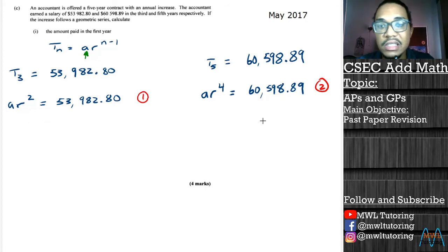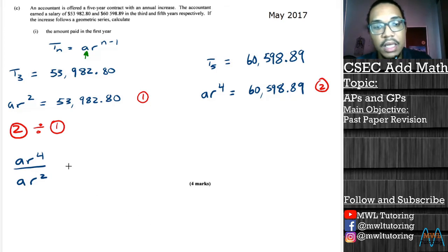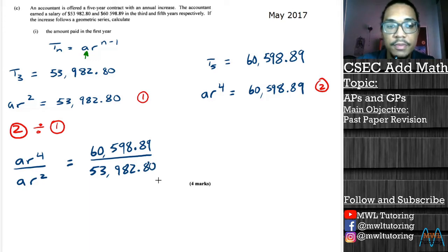The best way to go about solving this simultaneous equation here is to just say equation 2 divided by equation 1. Once we do that, on the left hand side we'll have a r^4 divided by a r^2, and on the right hand side we'll have 60,598.89 divided by 53,982.80. We could observe here on the left hand side that the a's will cancel with each other.